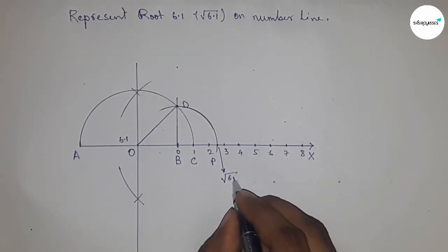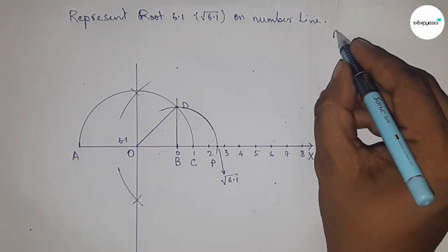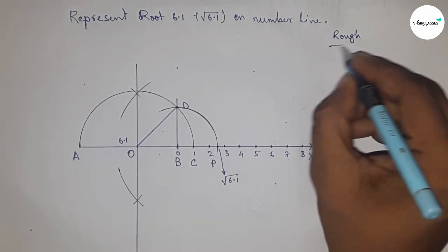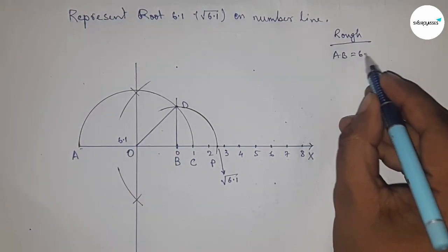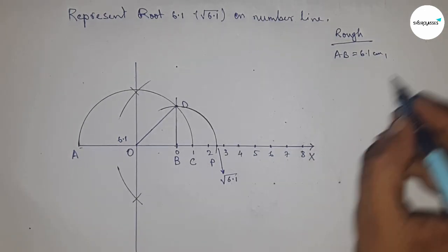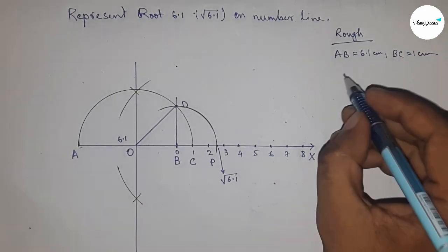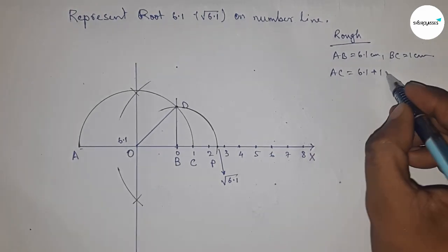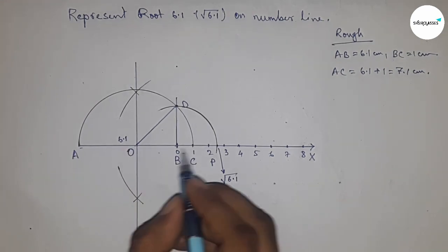Now let's discuss the calculation. Given AB equals 6.1 centimeters and BC equals 1 centimeter, so we can write AC equals 6.1 plus 1, which is 7.1 centimeters.